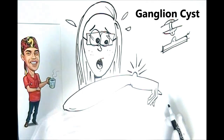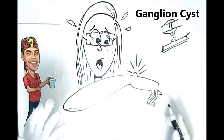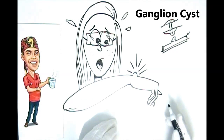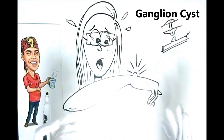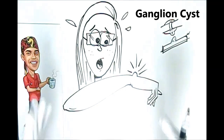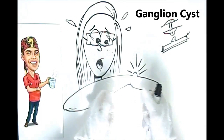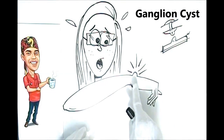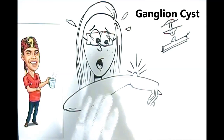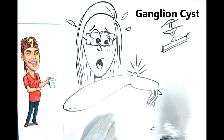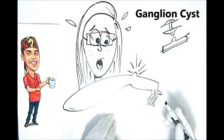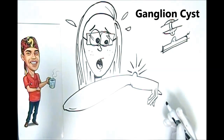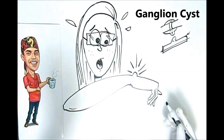One method is almost like an urban legend or an old wife's tale. In books or on the internet, you'll see something about taking a big book, like a Bible, and smacking it on top of the ganglion. What that does is it ruptures the ganglion under the skin. I have no idea if that is effective in the long run — it sounds painful to me and probably should be reserved for shows like Jackass.